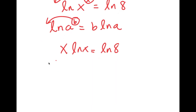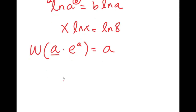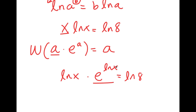From here, I'm going to use another formula that states that if I have something in the form W of a times e to the power of a, this is equal to a. This is known as the Lambert W formula. So if I take the W of something in the form a times e to the power of a, it's going to equal a. In this case, I'm going to rewrite this as ln x times e to the power of ln x is equal to ln 8, because x is the same thing as e to the power of ln x.